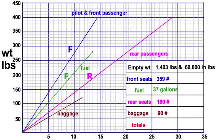Let's go with this fictitious weight and balance using the table method, just like your FAA test questions. I've got a color code to make it a little easier — you learn it here, you'll do it black and white fine. My hypothetical airplane weighs in at 1,403 pounds. I've got front seat passengers of 359, 37 gallons of fuel, 180 pounds in the back seat, and 90 pounds of gear.